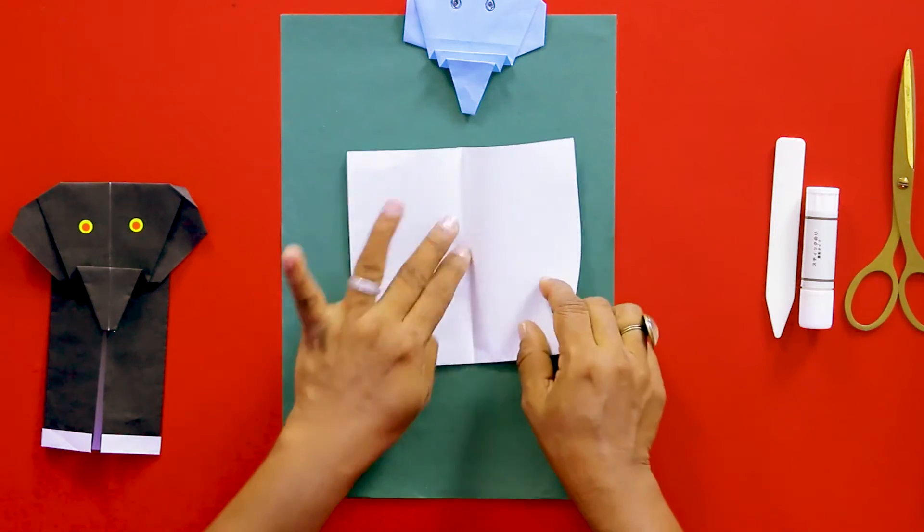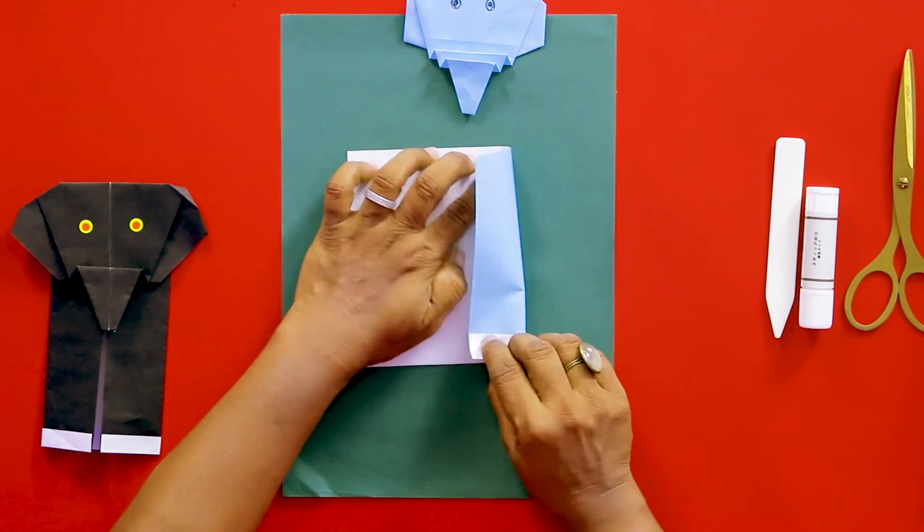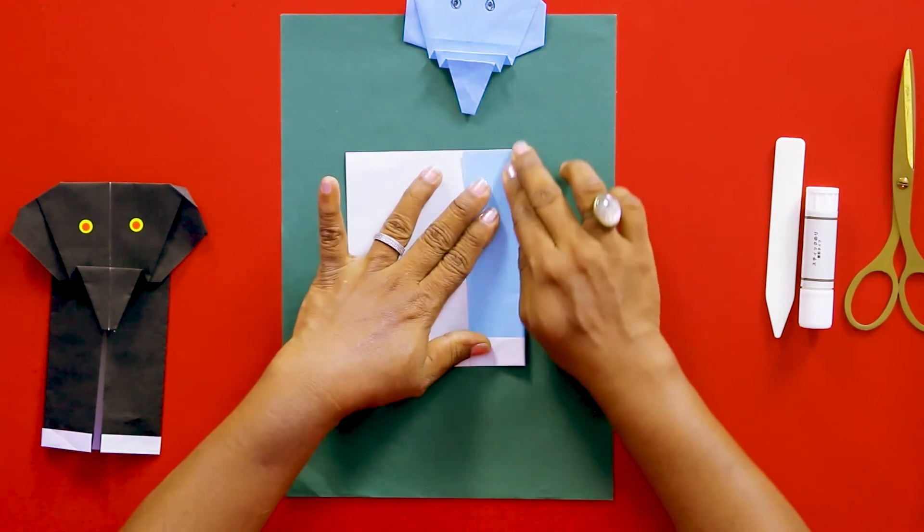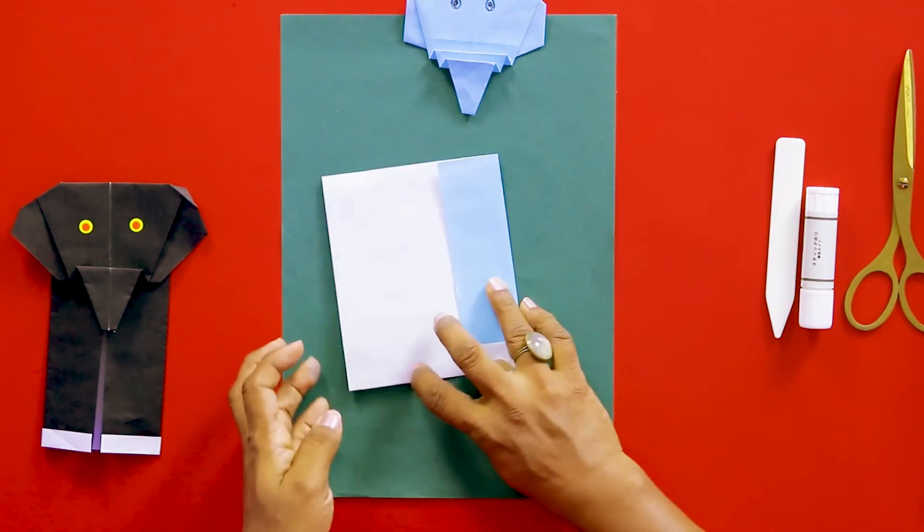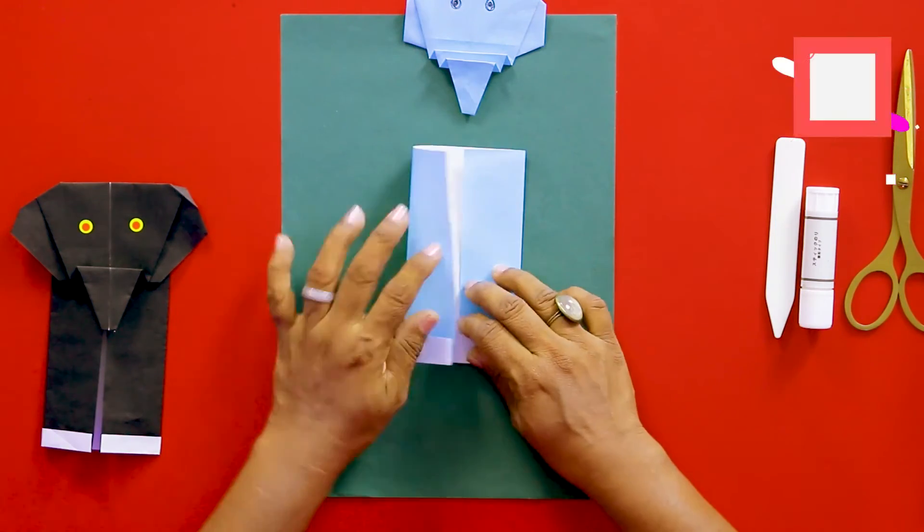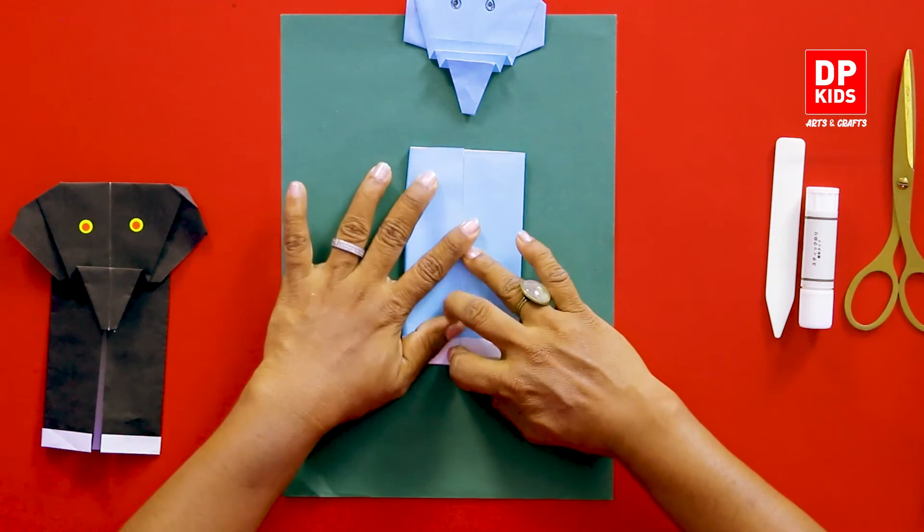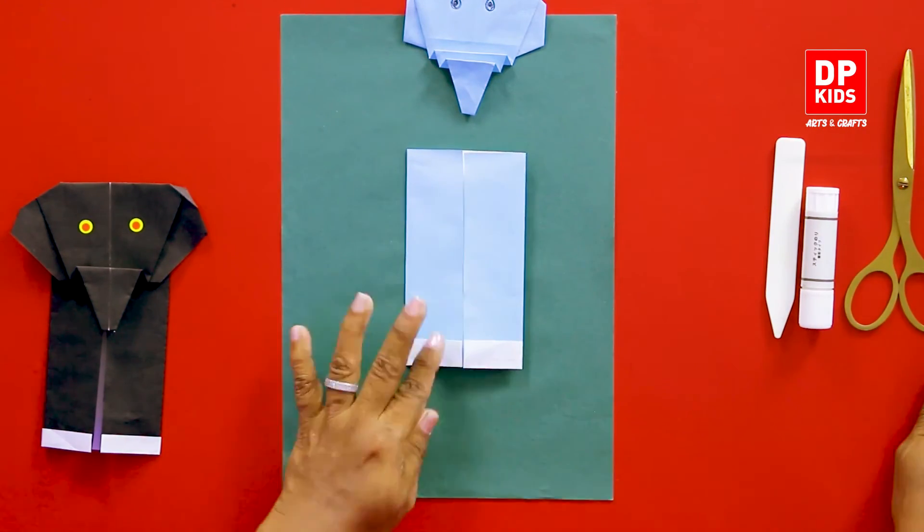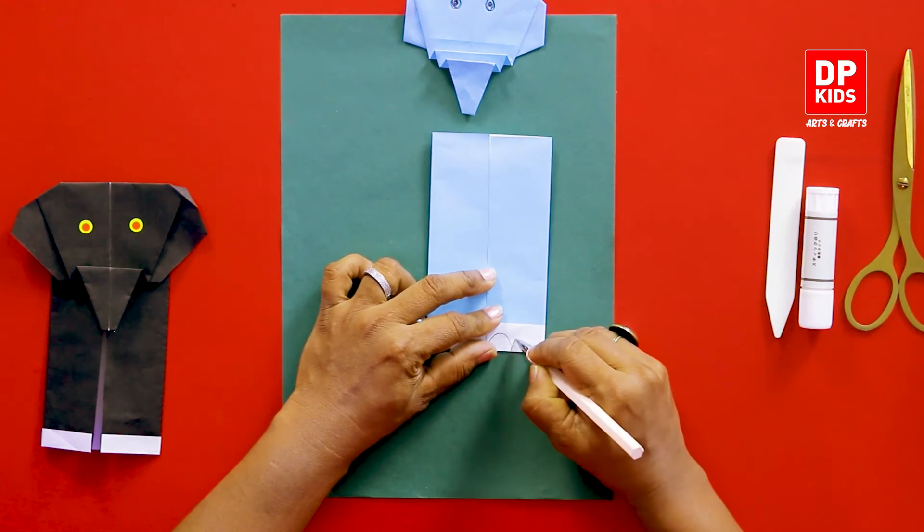Now open it up. Now this edge comes to the middle and do the same thing on the other side. And that's his body. Now we can draw the toenails.